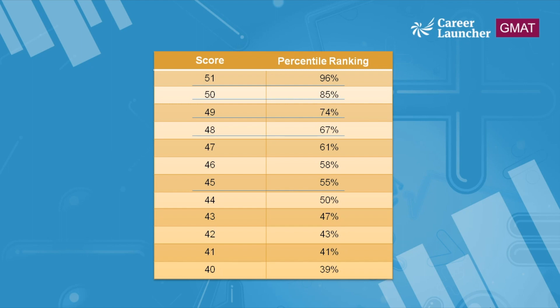Scoring in quant is relatively easier — about one third of students score around 48 or more. So anyone aiming for a 700-plus score should try to maximize their potential in the quant section.